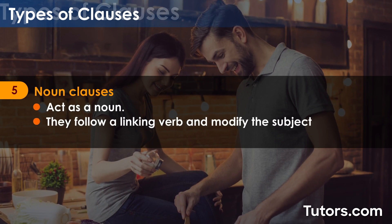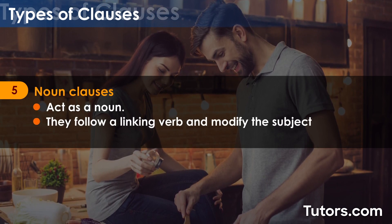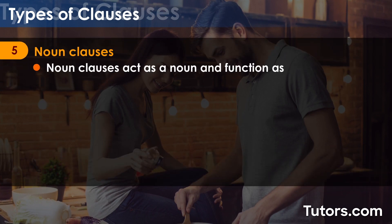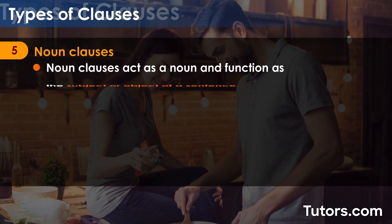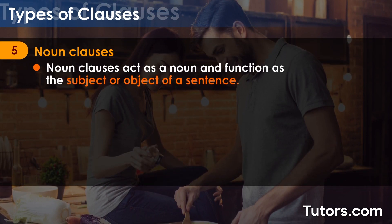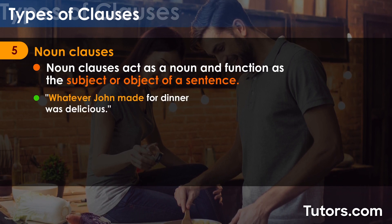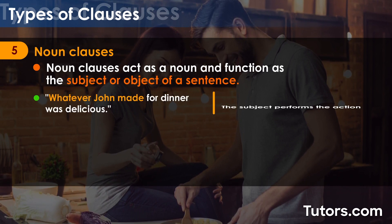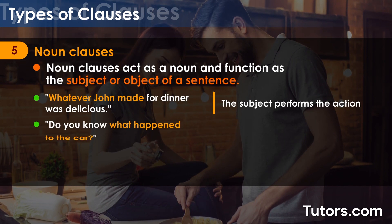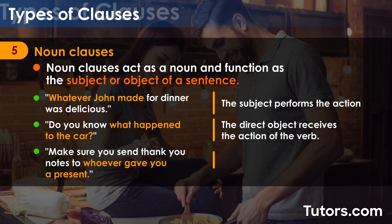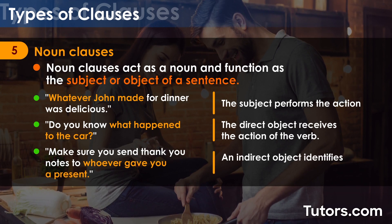Noun clauses act as a noun. They follow a linking verb and modify the subject of the sentence. Noun clauses can function either as the subject or object of a sentence. "Whatever John made" functions as the subject. "What happened to the car" is a direct object. "Whoever gave you a present" is an indirect object.